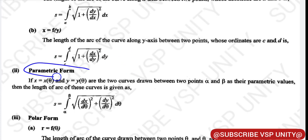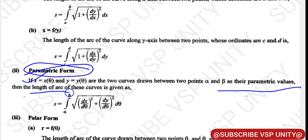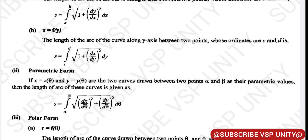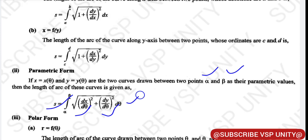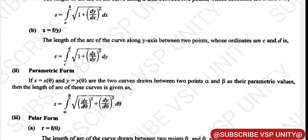If the question is in parametric form — that is, if x is equal to x(θ) and y is equal to y(θ) are the two curves drawn between two points with parametric values alpha and beta — then the length of the arc of the curve is given as: s is equal to integral from alpha to beta of under root of (dx/dθ) squared plus (dy/dθ) squared, dθ. This is the formula to find the length of an arc of a parametric curve.